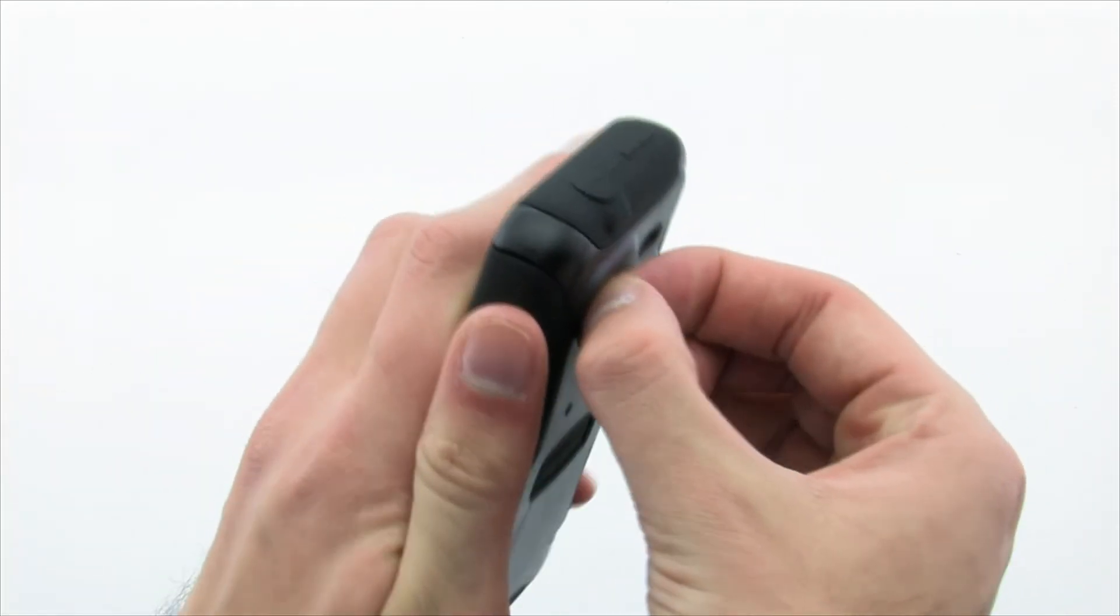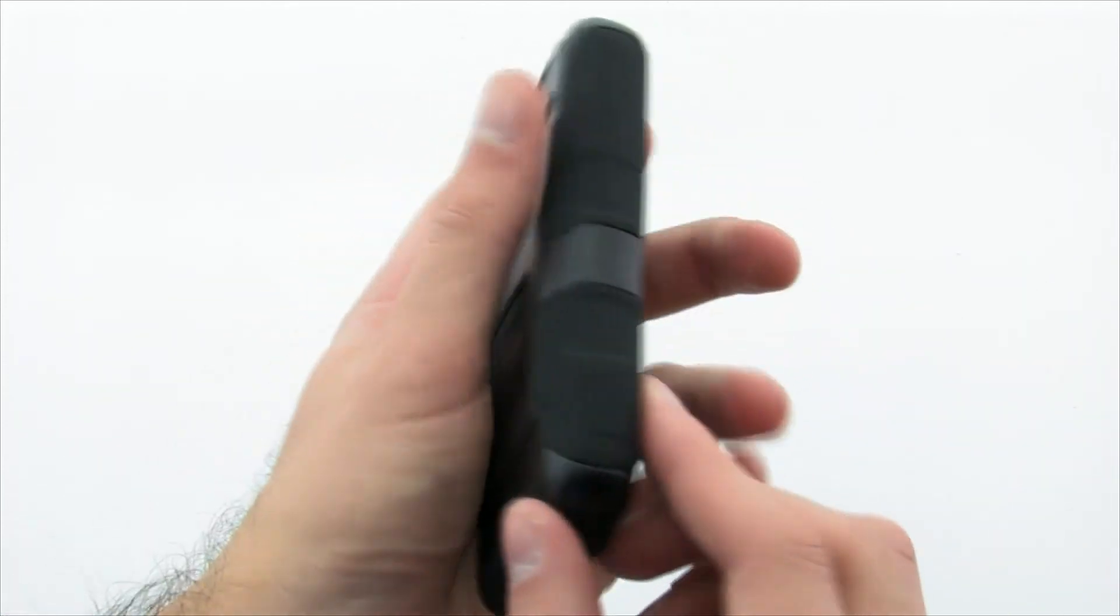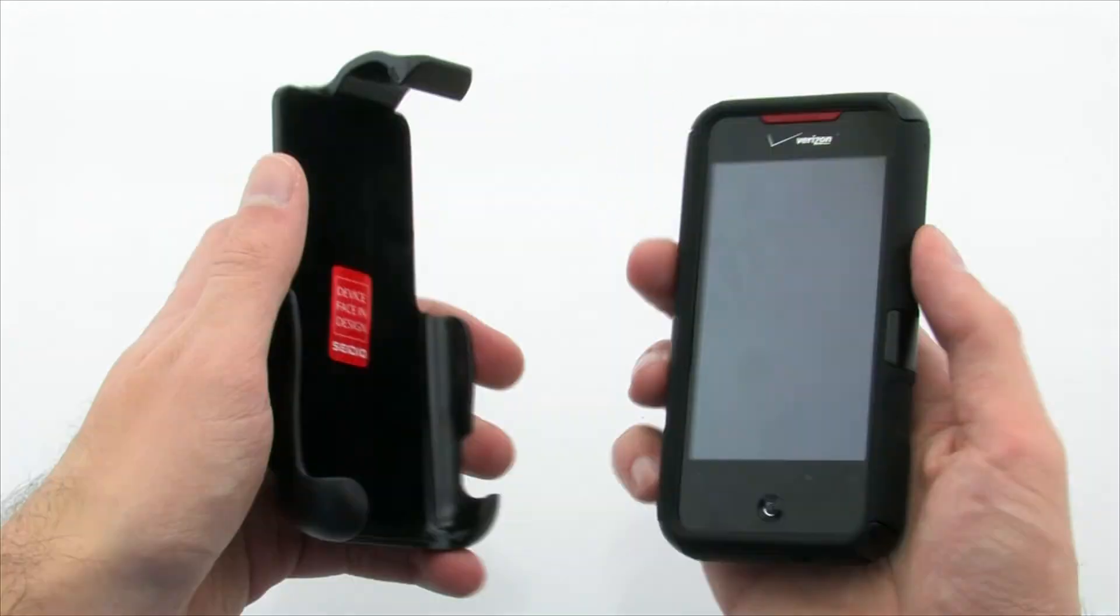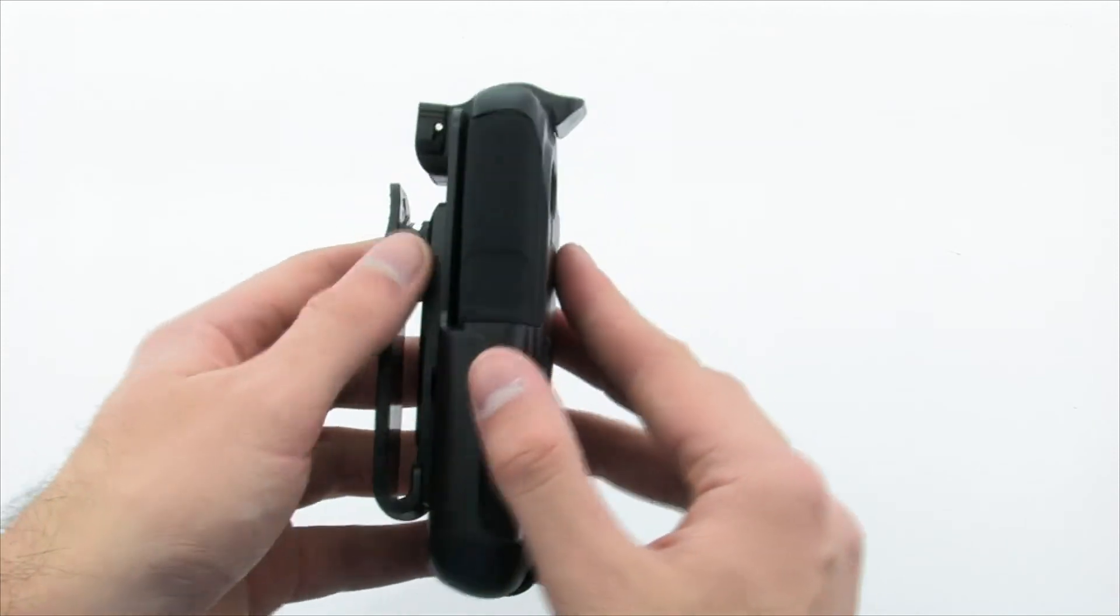The Seidio Convert Case provides the ultimate protection for your device, from the drop and shock protection of the outer layer to the dust and dirt protection of the inner layer. The final layer of protection is the locking holster which keeps your device safe on your side to ensure it is not accidentally bumped out or damaged.